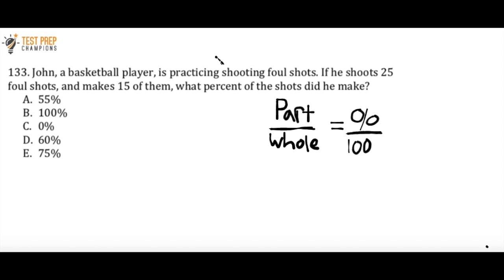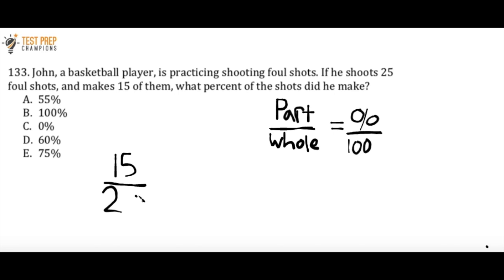On screen is the standard formula that most textbooks are going to use to teach percents for the GED. It's part over whole equals percent over 100. If you're able to just look at a question like this and intuitively know what to do without using the formula, that's great and it's probably going to save you time. But I want to take the time to quickly break down this formula.